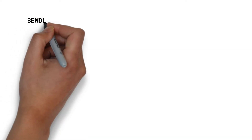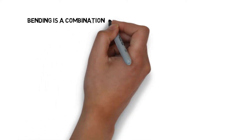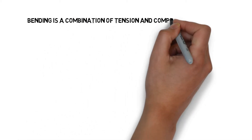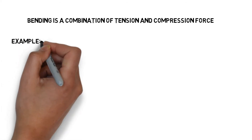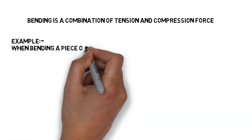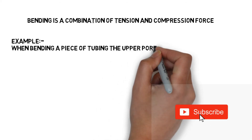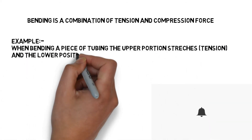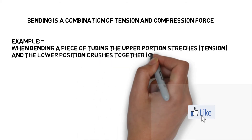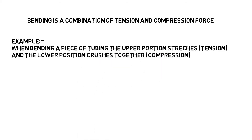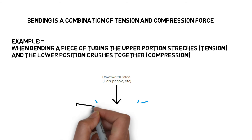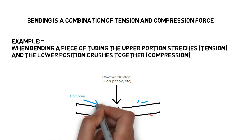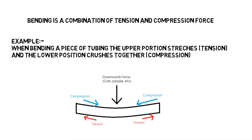Bending is a combination of tension and compression force. When bending a piece of tube, the upper portion stretches — that is tension — and the lower portion crushes together — that is compression.